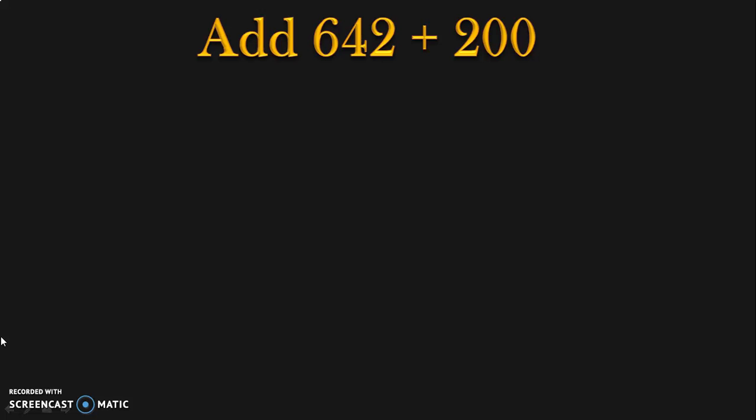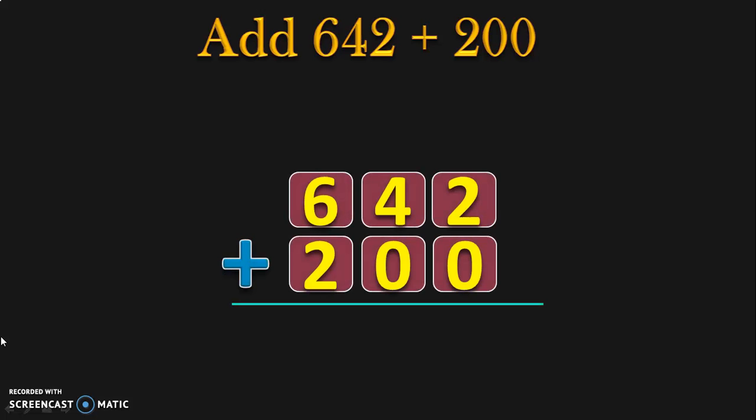First, we are going to add 642 plus 200. Both these numbers are 3-digit numbers, so you can write them vertically one below the other: 642 plus 200. It is always a good practice to write down the place values — ones, tens, and hundreds.